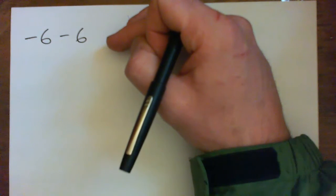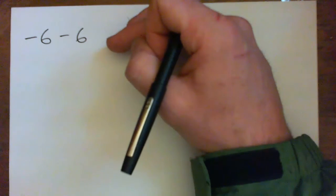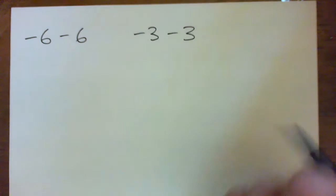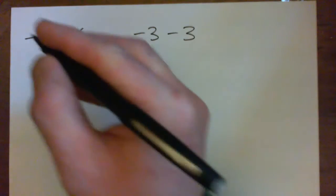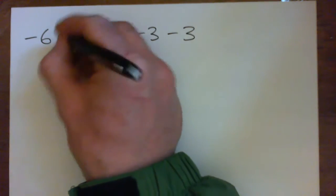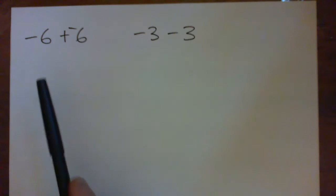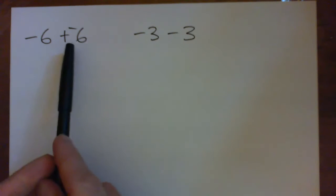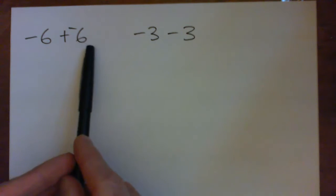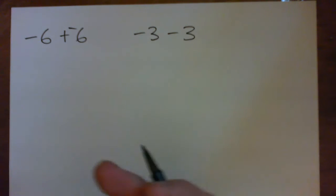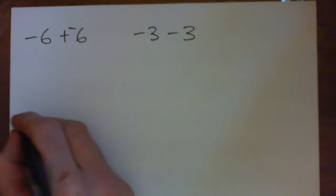Another way to think about it is you can take this subtract sign and now it says negative 6 plus negative 6, which is like the debt of six dollars combined with another debt of six dollars, which makes a combined debt of twelve dollars.